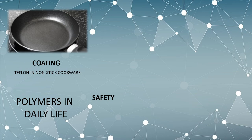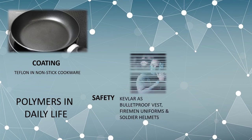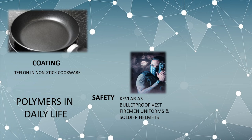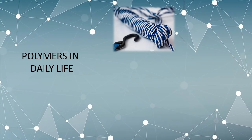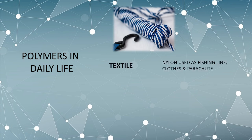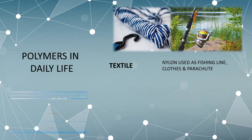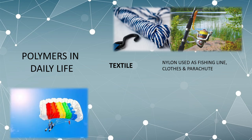For safety and defense, a type of polymer known as Kevlar is used to make bulletproof vests, fireman uniforms, and helmets for soldiers. Bakelite is a safe material used as electrical switches and cookware handles. Polymers are also essential in the textile industry — nylon is used to make clothes, fishing lines, and parachutes, while polyester is used to make sail clothes and parachutes.